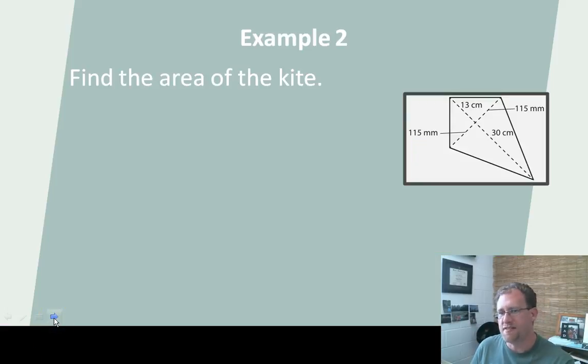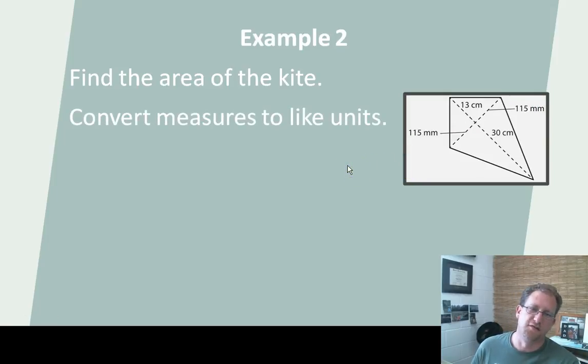Let's find the area of this kite. Now, they're being tricky because they're giving us 115 millimeters, 13 centimeters, 30 centimeters, 115 millimeters. Look at that. Not the same unit. Sneaky, cheeky monkey. We have to first convert the measures into like units. So, 115 millimeters, 13 centimeters. Let's go to centimeters all around.